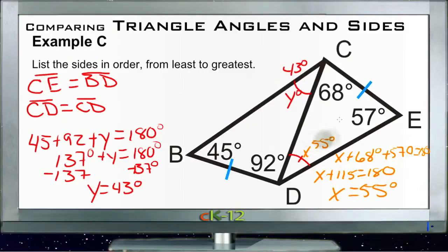So that tells us, based on our theorem comparing triangles to sides, the SAS inequality theorem, since this side here is congruent to this side and these two sides are the same, then whichever of these two angles is greater is going to be opposite the greater side. So that tells us that CE is greater than BD.